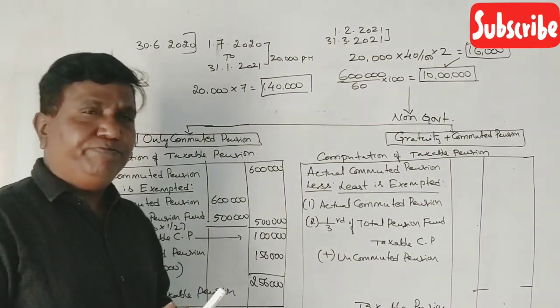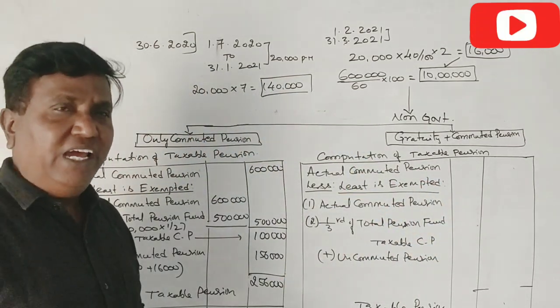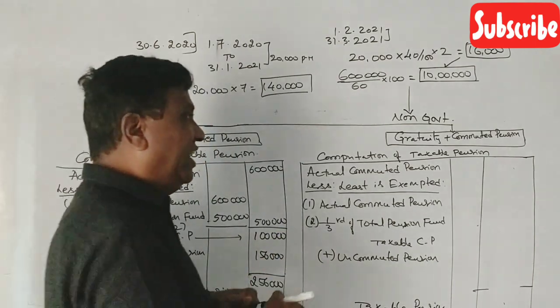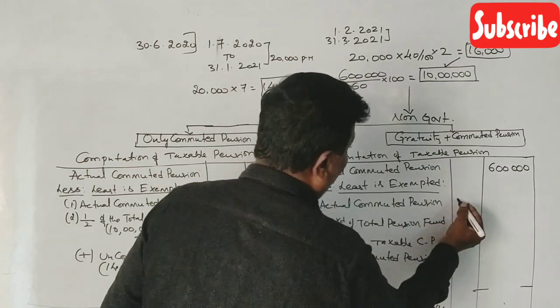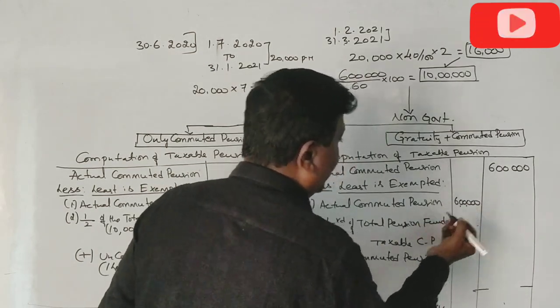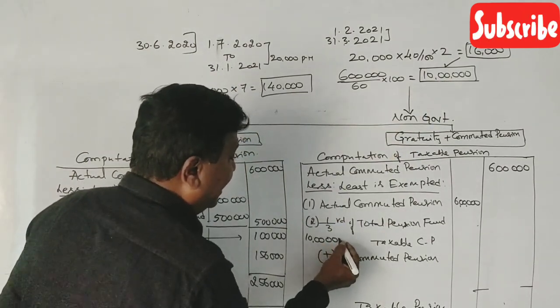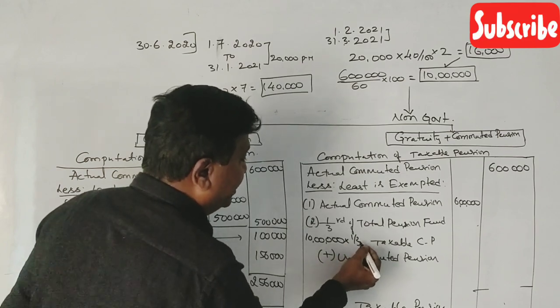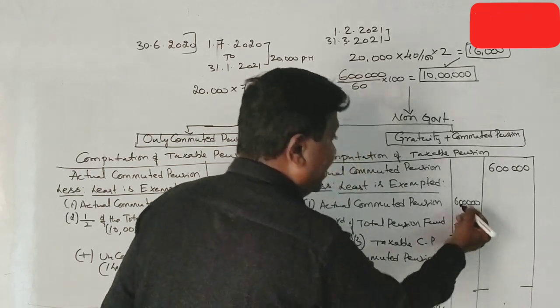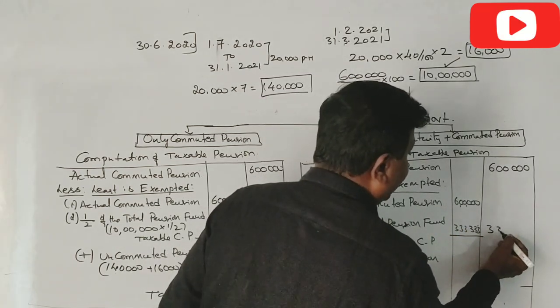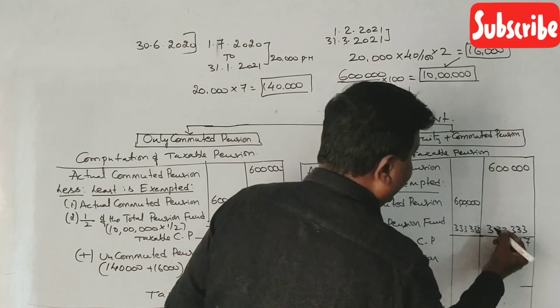Suppose our company is gratuity, and our pension is commuted. Actual commuted pension is 6 lakhs. So, total pension fund is 10 lakhs. In 10 lakhs, one-third exemption is 3,33,333. This is 3,33,333.